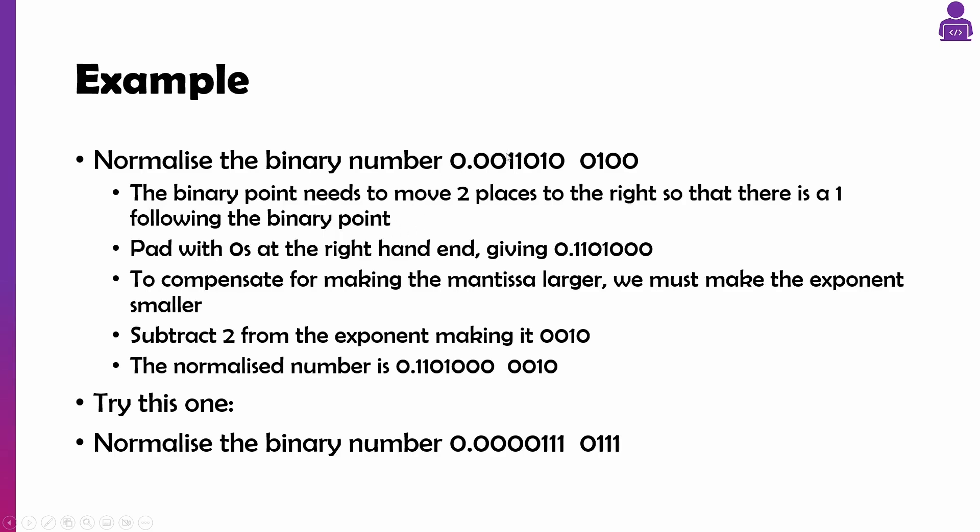But now our mantissa won't have the right number of bits, so we have to pad them by adding them to the end. So all we're really doing is moving those two zeros to the end here, which gives you the number 0.110100.